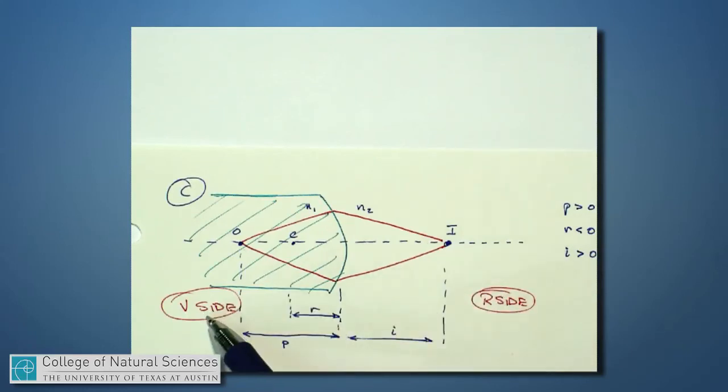Everything on the V side, like radii and images, would be negative. Everything over in the R side, like this image I just drew here, would be positive. Again, you don't know if I've drawn this correctly or not, I'm just asking you to accept it, that i is over here on this side for this particular diagram, but our whole goal for today is to be able to calculate whether this is true or not.